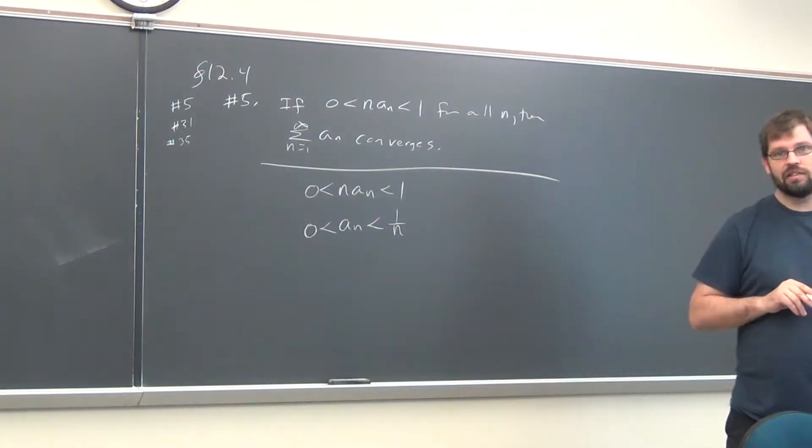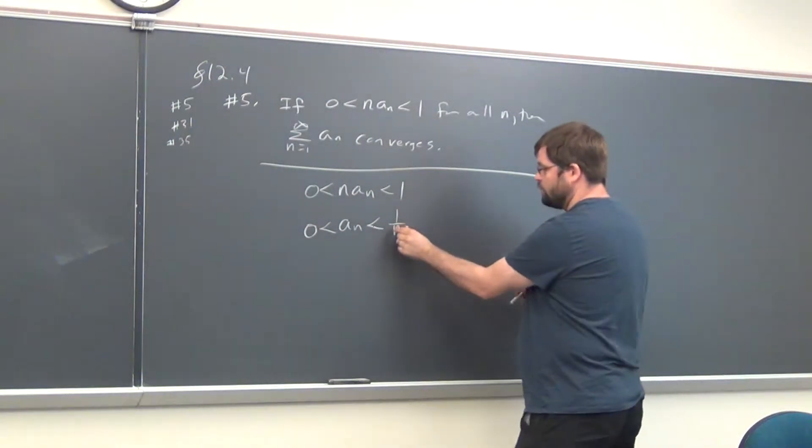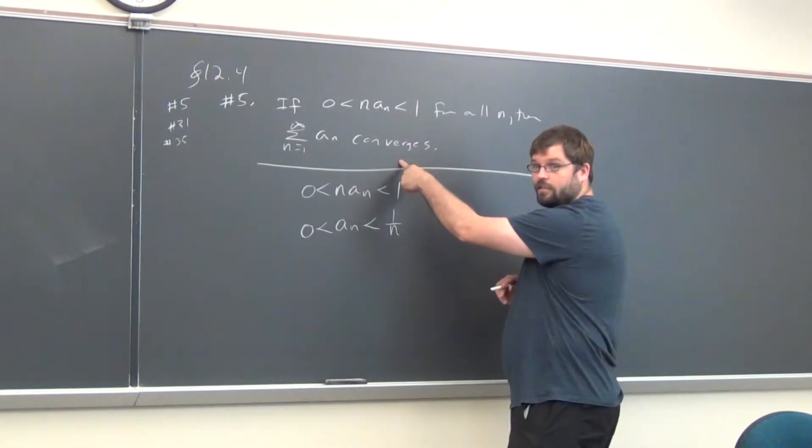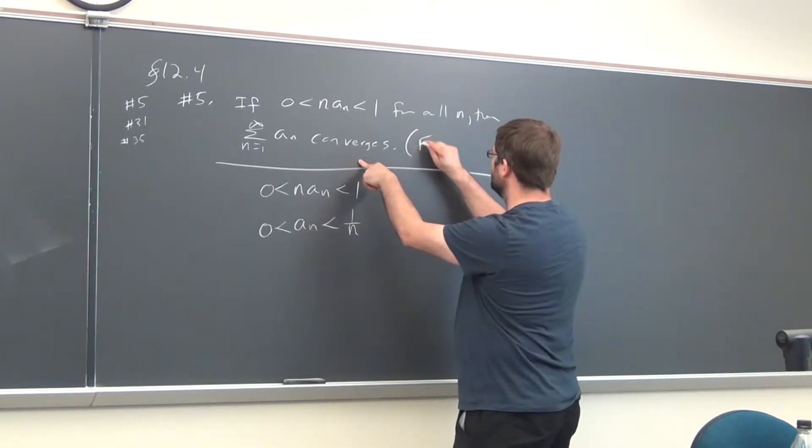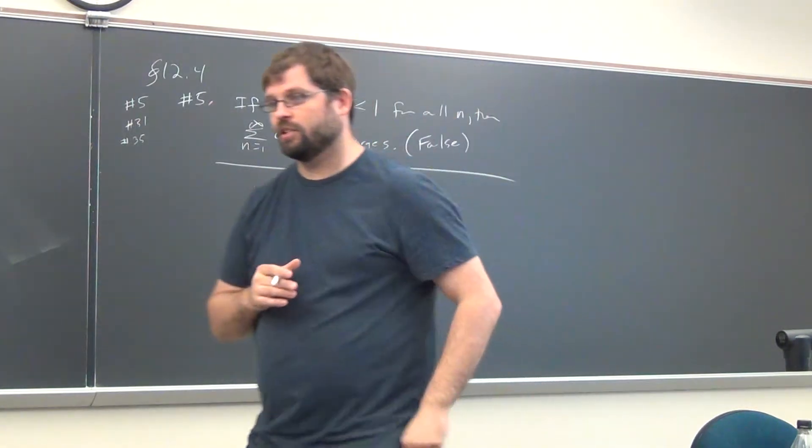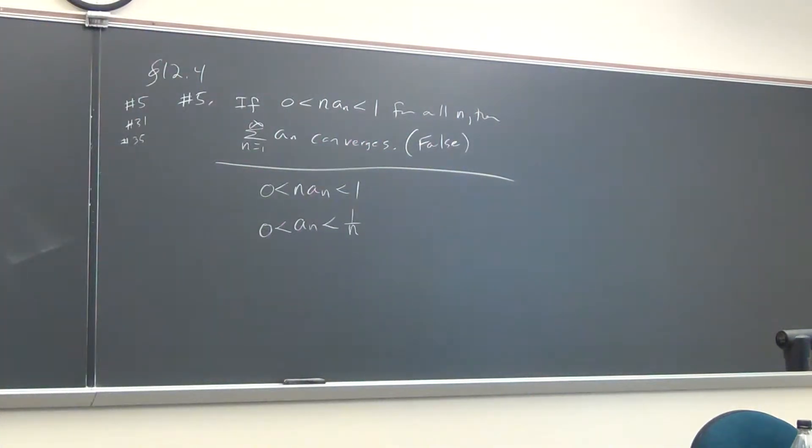The question is, if anything is smaller than 1 over n, does it necessarily converge? That's what it's saying, right? The answer's false, and we should come up with a counterexample that shows why that's true.